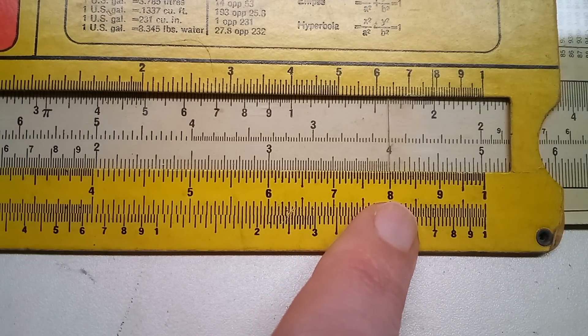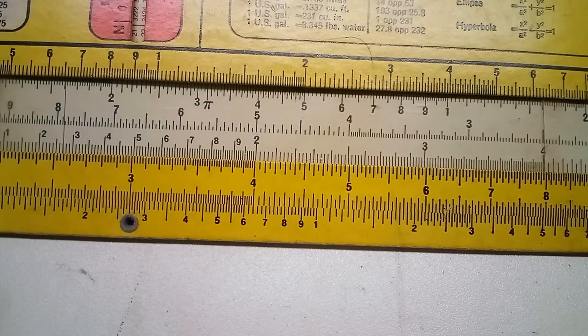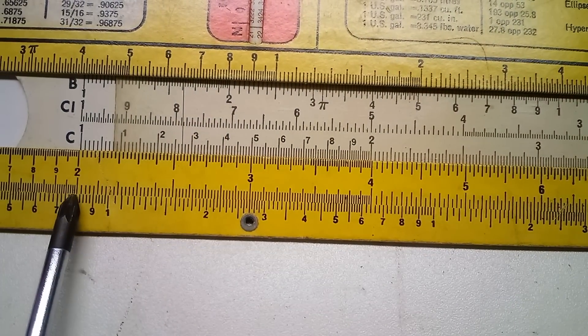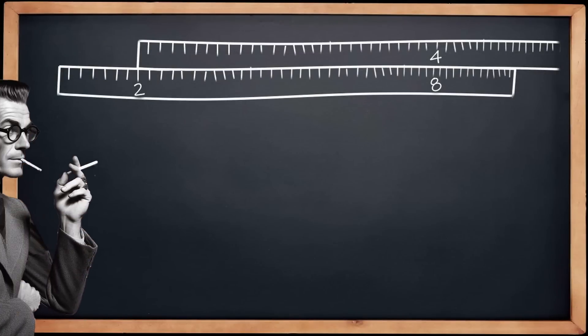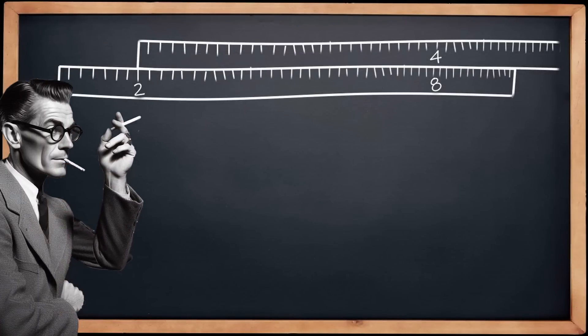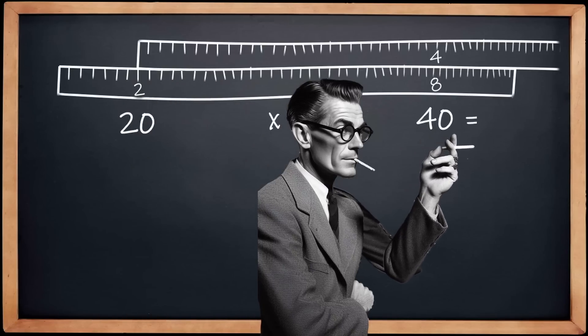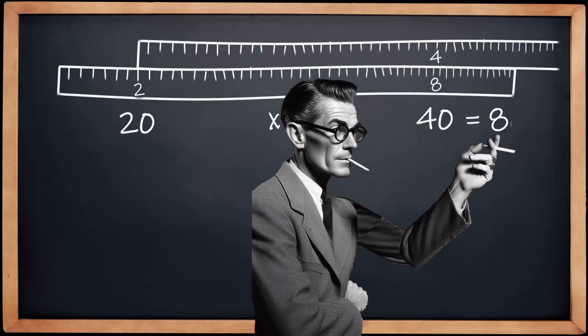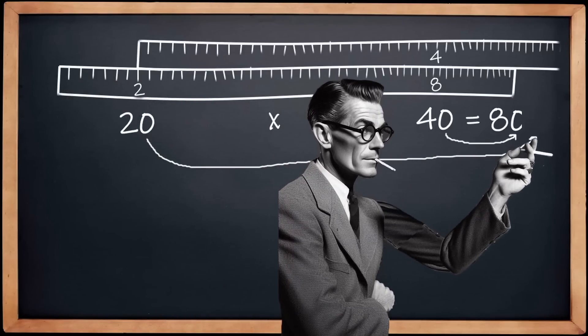If you want to work with numbers larger than 10, you have to add the zeros on yourself. So for 20 times 40, we do the same thing we did before—line this up with the 2, except now it would be 20, and the 4, which would now be 40. And then for our answer we'd have to remember in our head to add two extra zeros to it, so instead of 8 we're at 800.